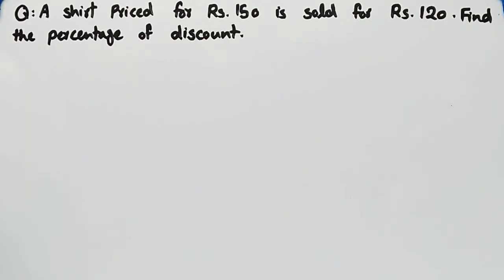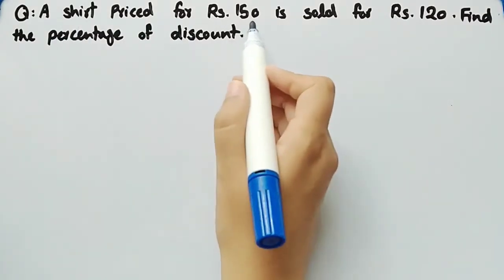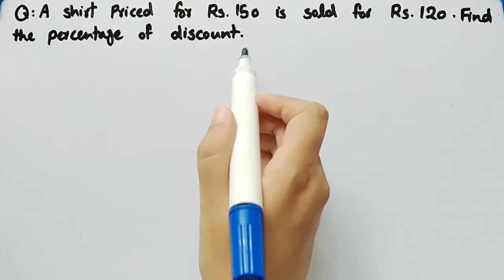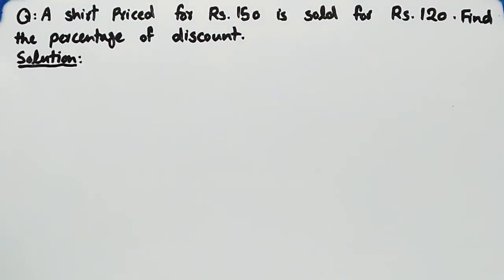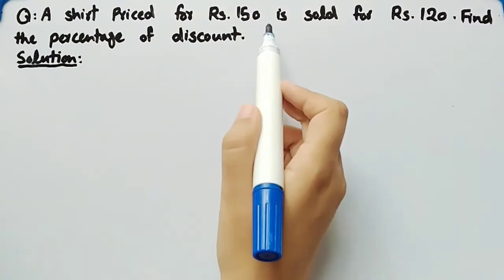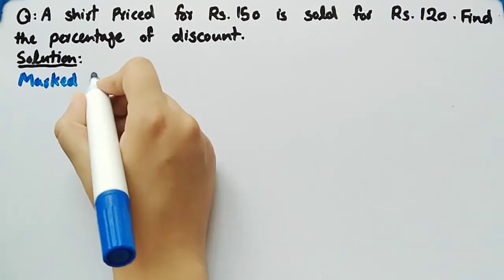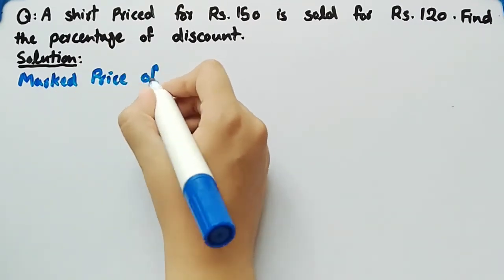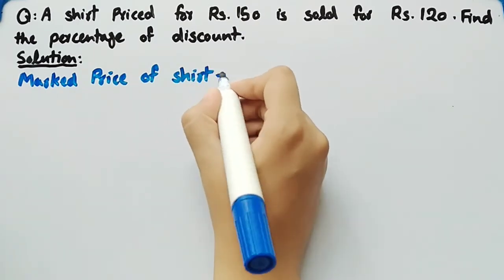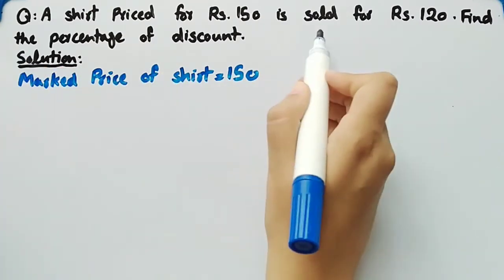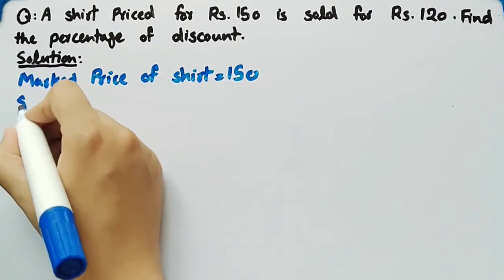In this video we will discuss a word problem related to percentage of discount. The problem states that a shirt priced for rupees 150 is sold for rupees 120. Find the percentage of discount. Since the shirt is priced for rupees 150, the marked price of the shirt is equal to 150, whereas the shirt is sold for rupees 120, so the sale price of the shirt is equal to 120.